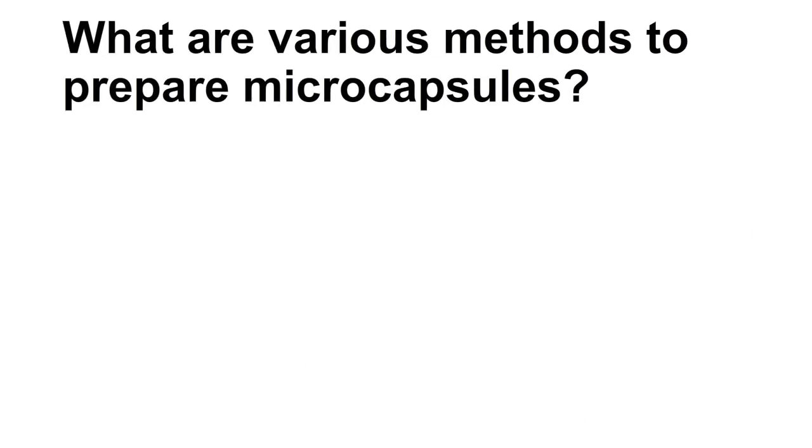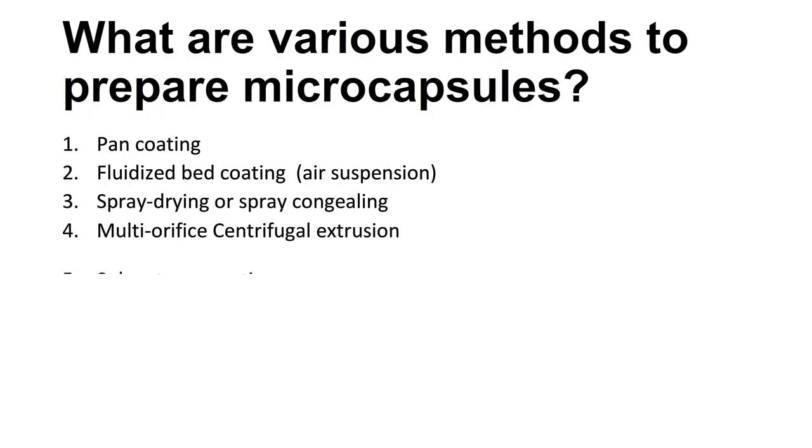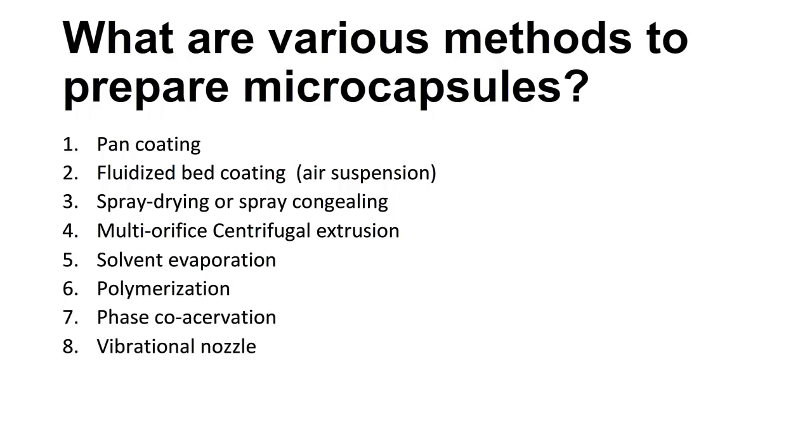What are various methods to prepare microcapsules? 1. Pan coating. 2. Fluidized bed coating or air suspension. 3. Spray drying or spray congealing. 4. Multi-orifice centrifugal extrusion. 5. Solvent evaporation. 6. Polymerization. 7. Phase coasservation. 8. Vibrational nozzle. 9. Supercritical fluid anti-solvent method. 10. Thermal gelation.